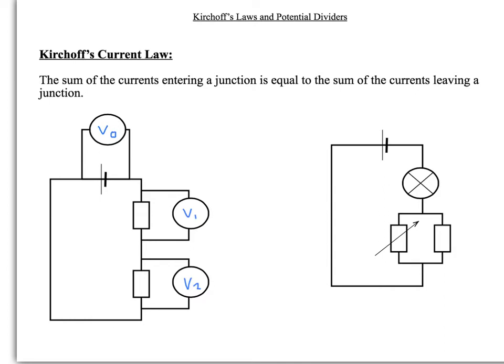Kirchhoff's current law states that the sum of current entering a junction is equal to the sum of the current leaving a junction. Essentially, this is an expression of conservation of charge, which you'll learn about in the other part of unit 1.